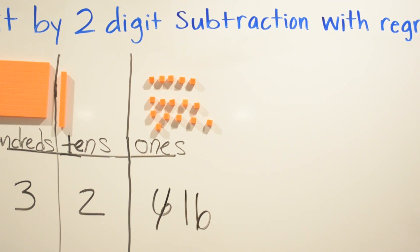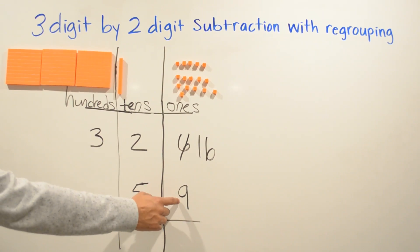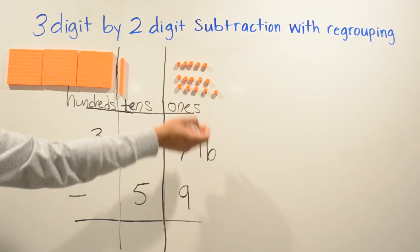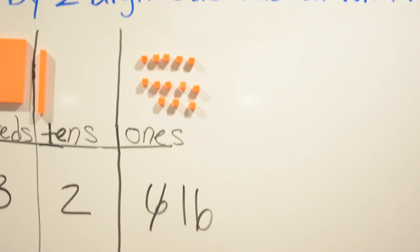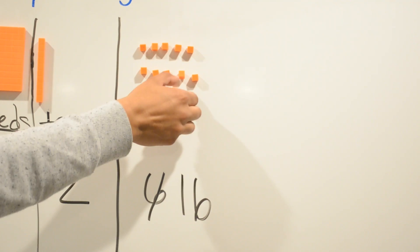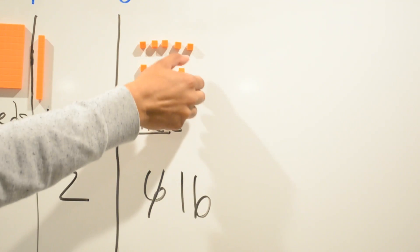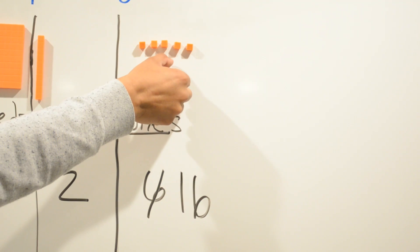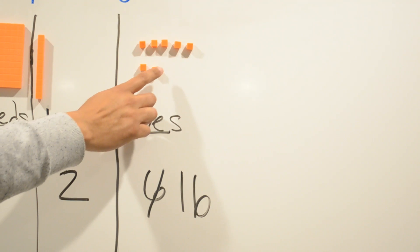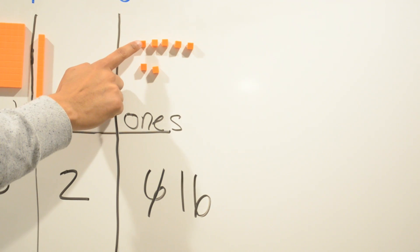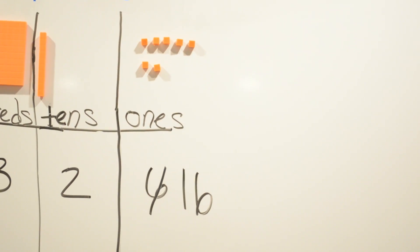So now we have 16 minus 9. We're going to take away nine: one, two, three, four, five, six, seven, eight, nine. So we're going to count what we have left: one, two, three, four, five, six, seven.